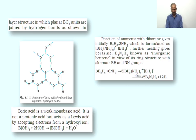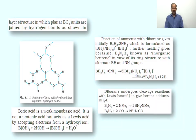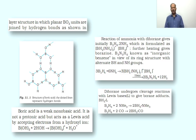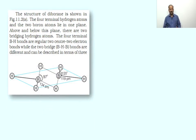Diborane when treated with Lewis bases undergoes cleavage reactions. These cleavage reactions can be symmetrical or unsymmetrical type. With bulkier Lewis bases, diborane cleaves symmetrically. With smaller Lewis bases, diborane cleaves unsymmetrically. In the reaction with ammonia, unsymmetrical cleavage occurs, producing the compound [BH₂(NH₃)₂]⁺ and BH₄⁻.